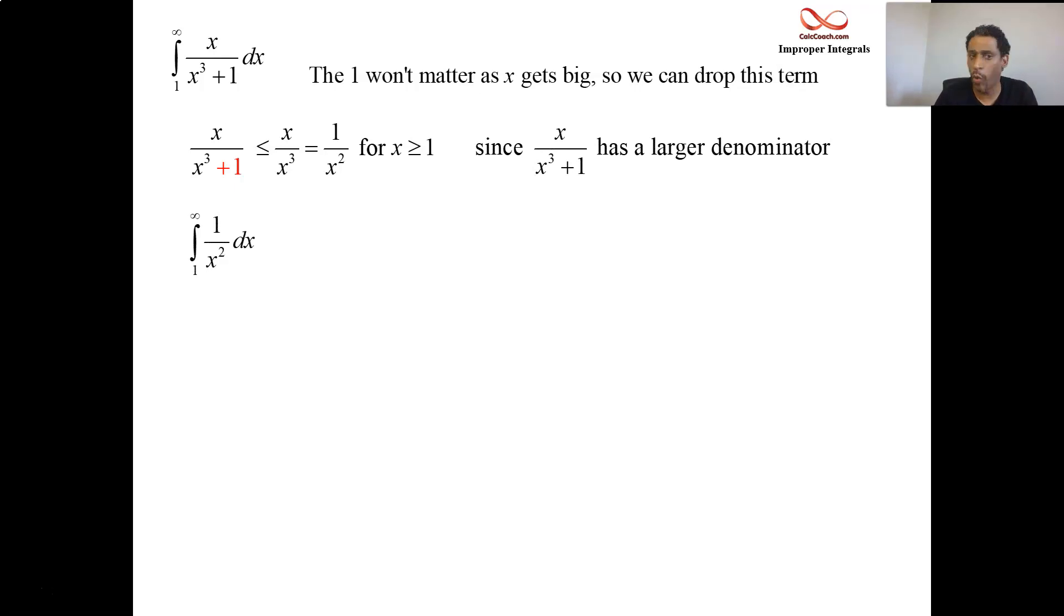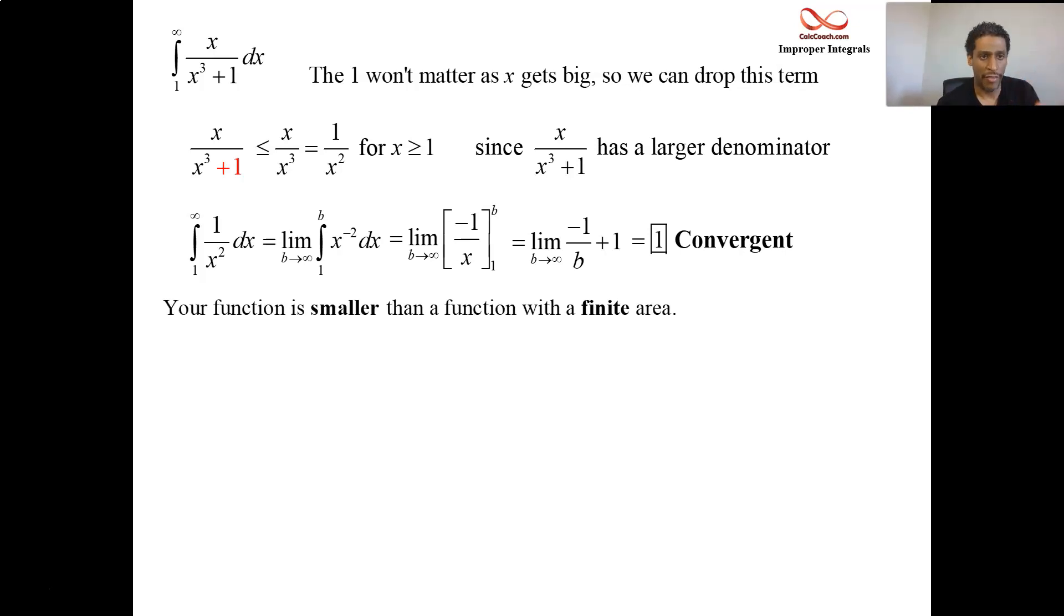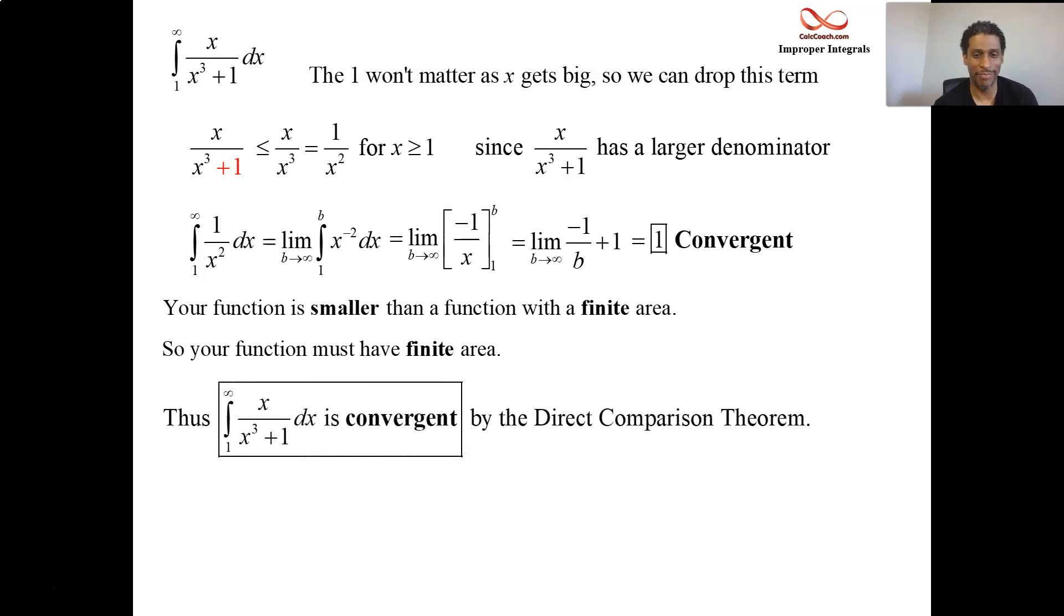And so now we got to make sure we can integrate the one that we went out and got. So one over x squared integrated from one to infinity, rip out the infinity, put in a b, x to the minus two, antiderivative will be x to the minus one over minus one, which simplifies to be minus one over x, put the b in, put the one in, let b go off to infinity. And this minus one over b term will go to zero. So the integral is convergent. The value that it's convergent to is insignificant to us. Just the fact that it's convergent. So we have exactly the setup for the direct comparison theorem. We have the given function is smaller than a function we went out and got that is convergent. So the given function is smaller than a function with finite area. So the given function must also have finite area. And so therefore we say that the original integral is convergent by the direct comparison theorem.